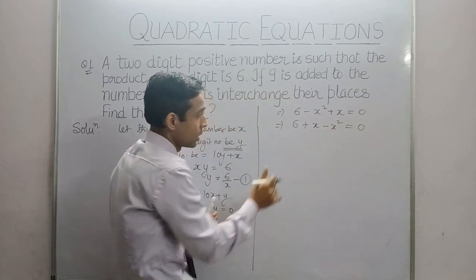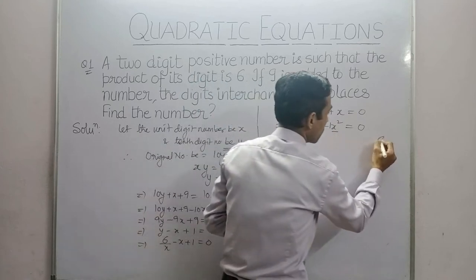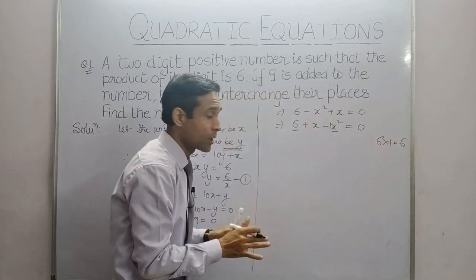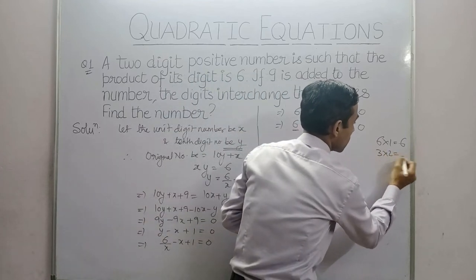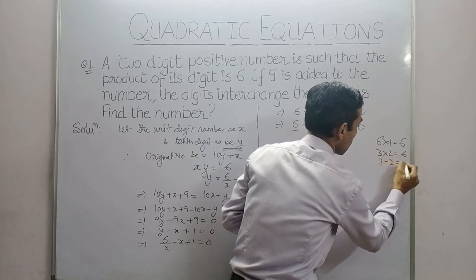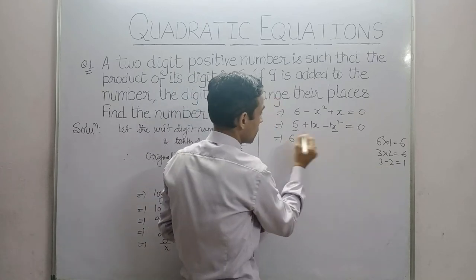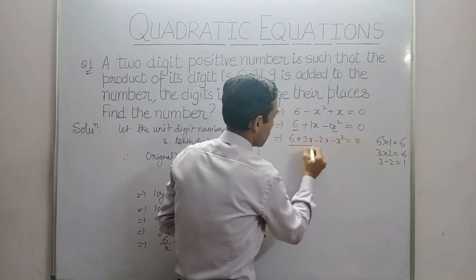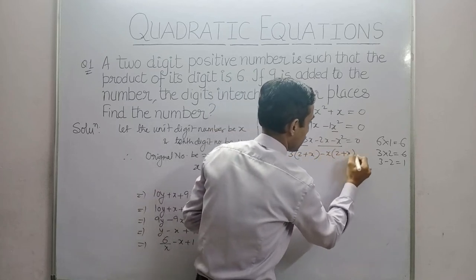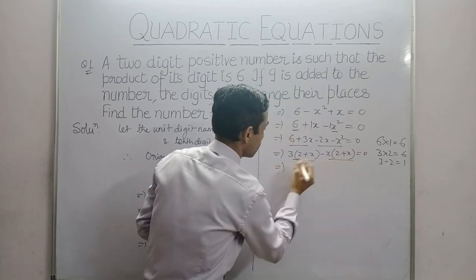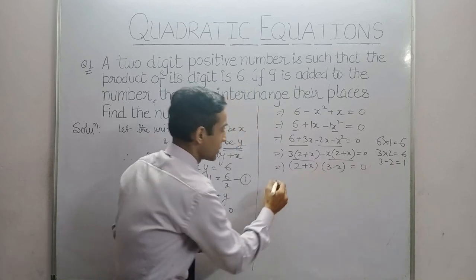Now, constant term is 6 and x² coefficient is -1. 6 into 1 is 6. We will factorize this way so that our center value is 1. 3 into 2 is 6. 3 minus 2 is 1. So we will split x as 3x - 2x. Taking common: -x² + 3x - 2x + 6 = 0. Pairing and taking common out: x(-x + 3) - 2(-x + 3) = 0. So we get (x + 2)(-x + 3) = 0 or (x + 2)(3 - x) = 0. From this, we will get 2 values of x.